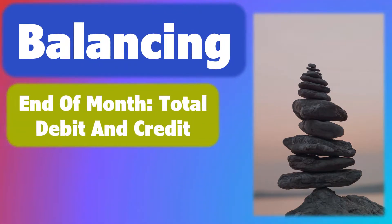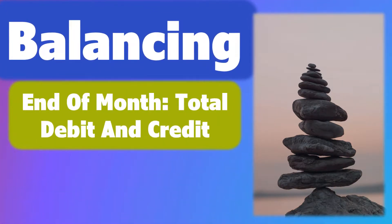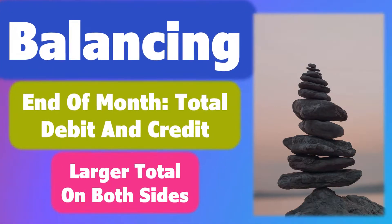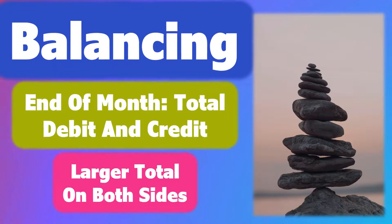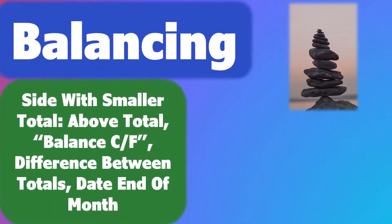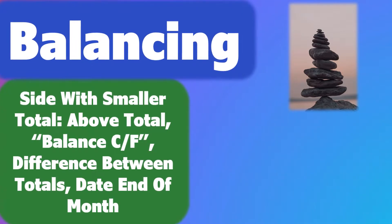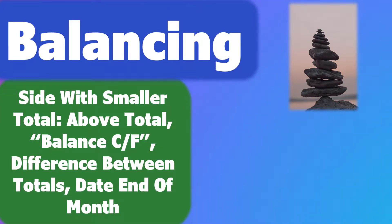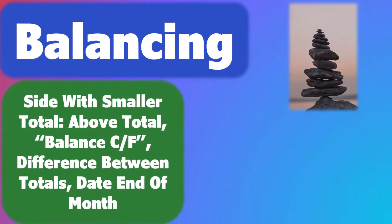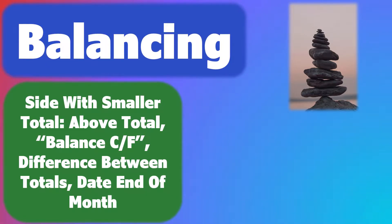At the end of the month, we total both the debit and the credit side of the ledger. Then we write the larger total on both sides. On the side with the smaller total, above the total we add an entry called balance C/F, for balance carried forward, with the difference between the totals and with the date as the end of the month.